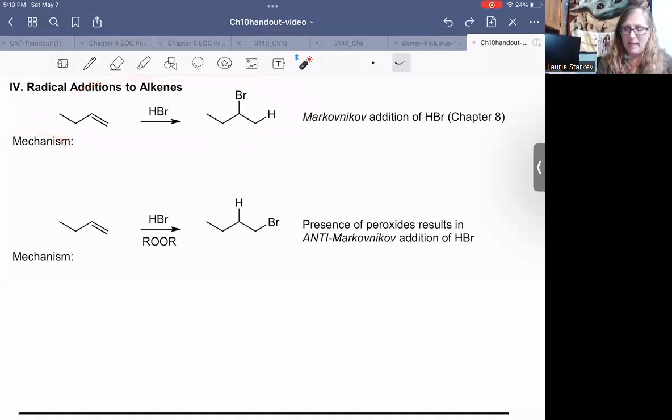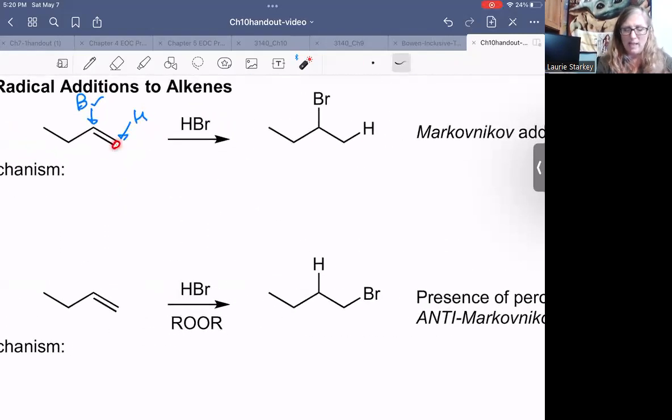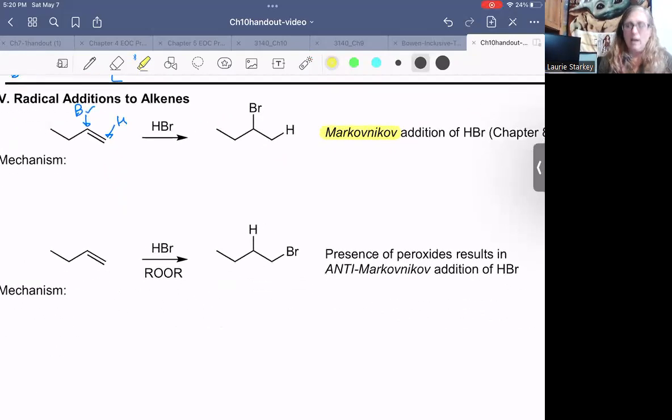We described it as Markovnikov addition because we broke the pi bond and we add an H and a Br, and the hydrogen went to the carbon with more hydrogens. The hydrogen atom went to the end carbon, the bromine atom went to the more substituted carbon, and we described that regiochemistry as Markovnikov. Now we saw that in chapter eight with alkene chemistry. Let's review that mechanism to see why we get Markovnikov addition of HBr here.